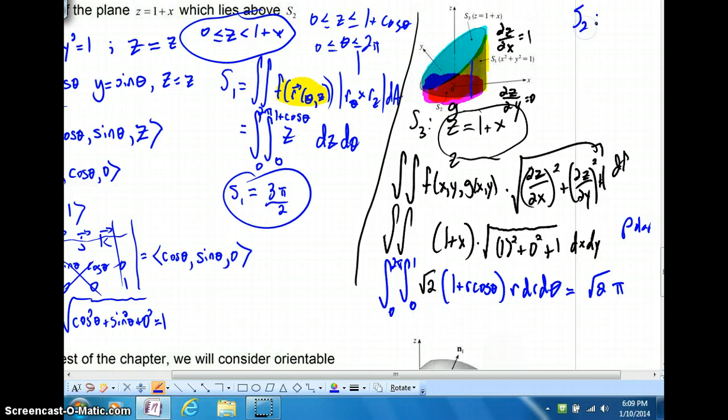Now, S2 delightfully has z equals 0. So, you're going to know that this double integral is going to work out. Because it's got a z, it has to equal 0. So, that's delightful. Final answer, just take your 3 pi over 2 plus root pi.